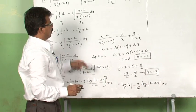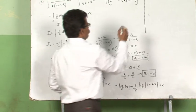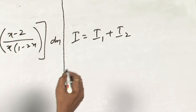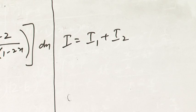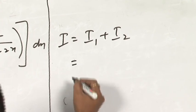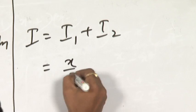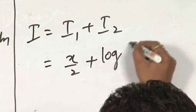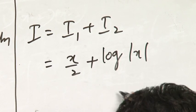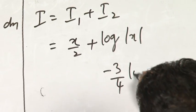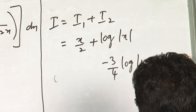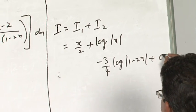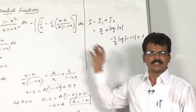Now let us write the full answer. Therefore I is equal to I₁ plus I₂. The overall answer is: I equals I₁ plus I₂. What is I₁? The first part of integration is x/2. Clubbing the constants, plus what is I₂? This is I₂: log|x| minus 3/4 log|1 minus 2x| plus C. I have clubbed the two constants into one C. So this is the final answer for this integration.